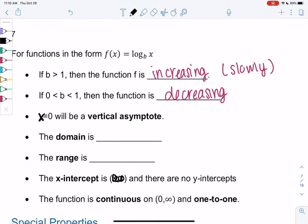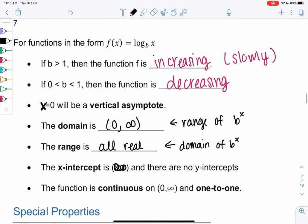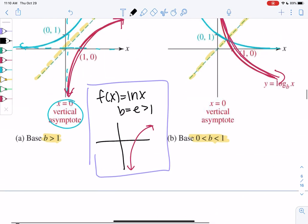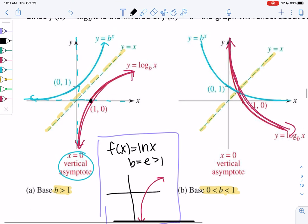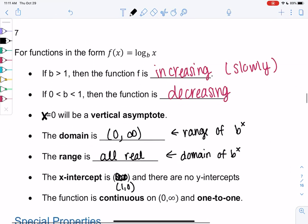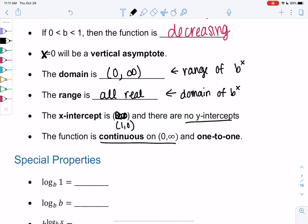The domain is the range of exponential functions. So the range of b to the x was 0 to infinity. So the domain of logs will be 0 to infinity, meaning I can only plug in positive numbers. The range of logs will be the domain of b to the x. Remember, that was a special inverse property. So the range is all real numbers, because that was the domain of exponentials. So the output is all real numbers. The x-intercept will be 1, 0. We can see that in the graphs before. Since before we had 0, 1, when we reflect about y equals x, we get 1, 0. And we have no y-intercepts. And then it'll be continuous on 0 to infinity and one-to-one.